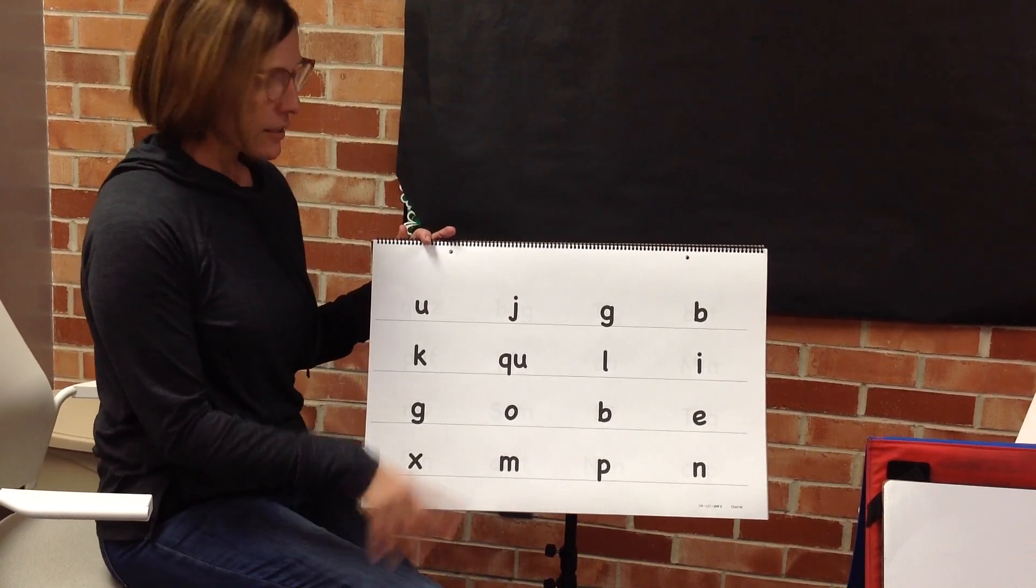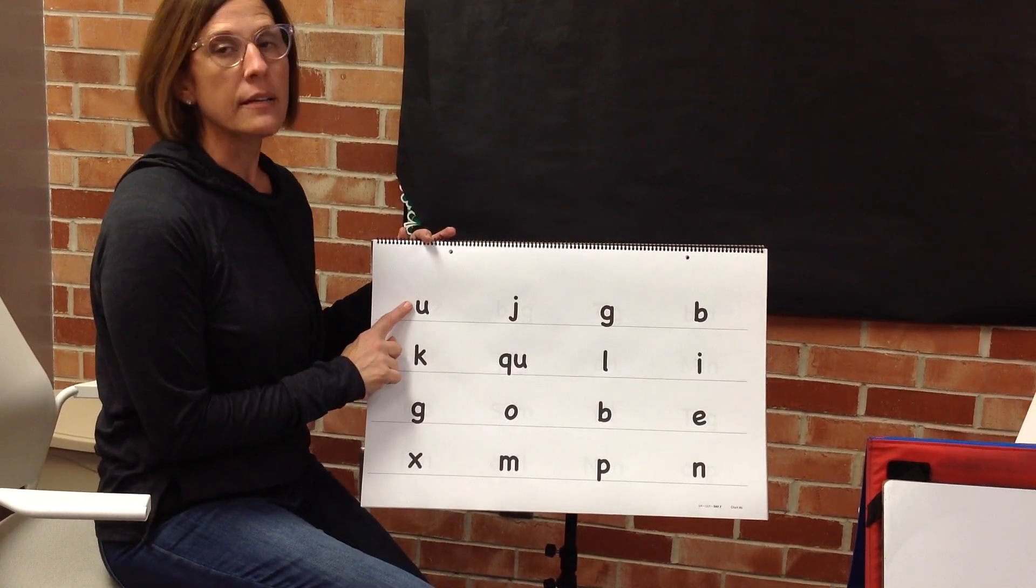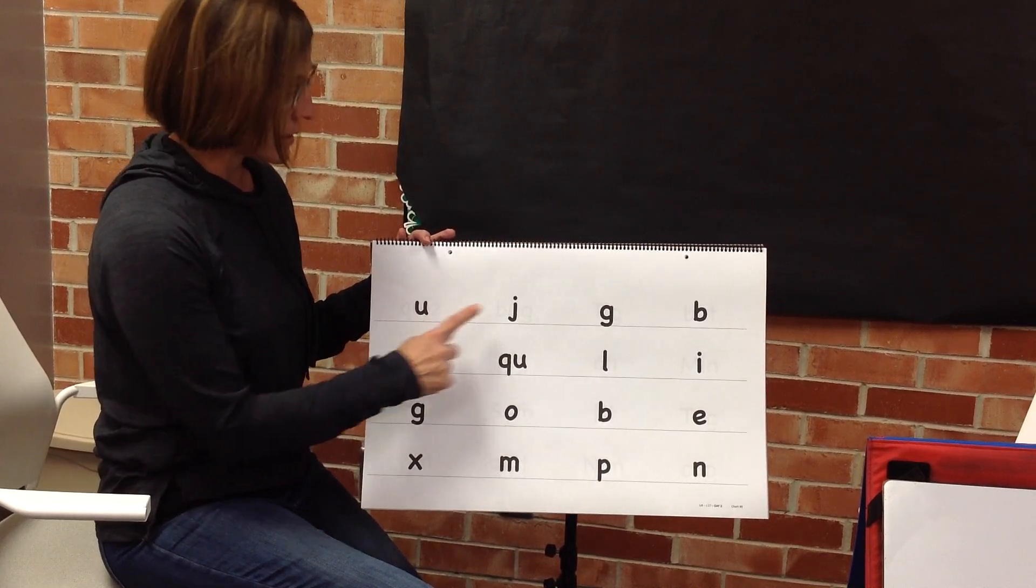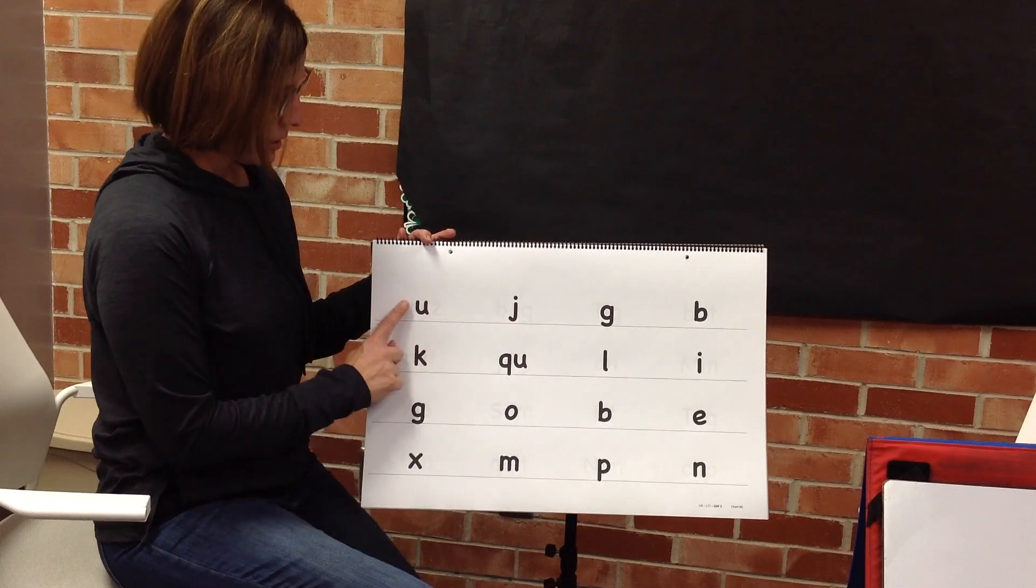Next, we will practice saying the sounds for some letters. When I touch next to the letter, think of the sound in your head. I will model the first two. My turn. Sound, a. Sound, j. Your turn. Sound, a. Sound, j.